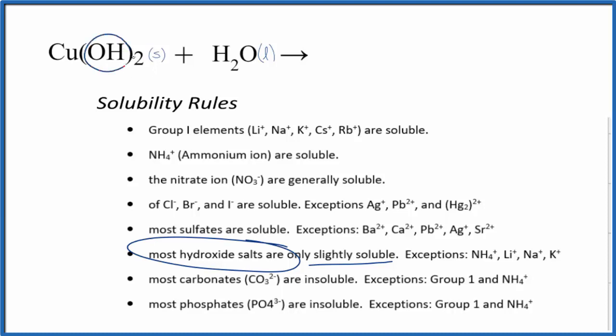We know the hydroxide ion, the whole thing, is one minus. We have two of those so the copper has to be 2 plus. We'll have our copper 2 ions, Cu2+, and then we'll have two of these hydroxide ions here.